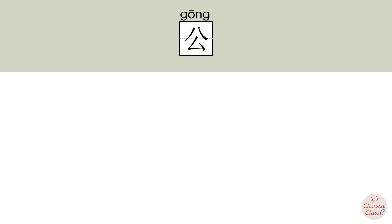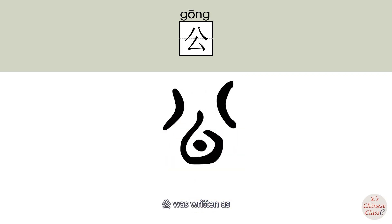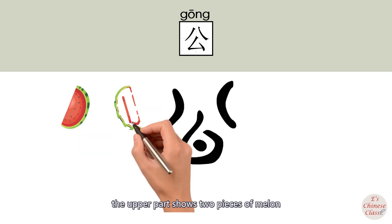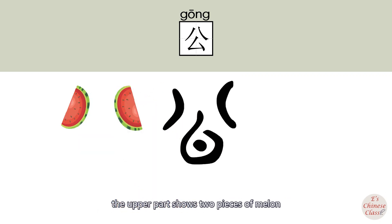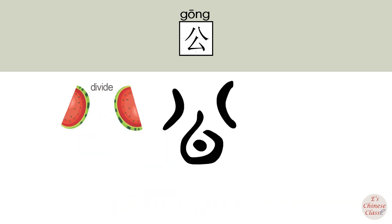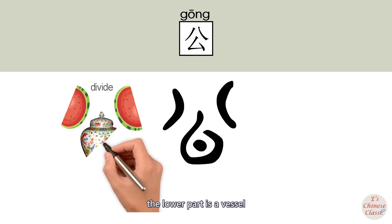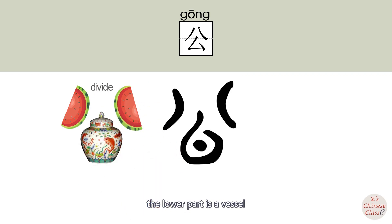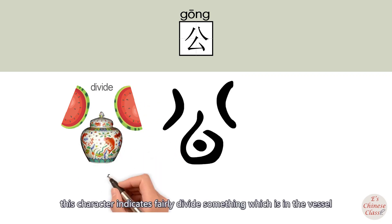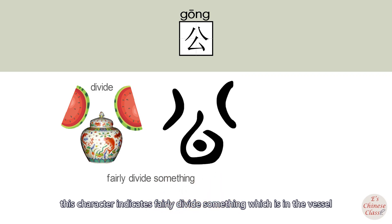deal with. In ancient Chinese, 公 was written in a form where the upper part shows two pieces of melon, meaning to divide, and the lower part is a vessel. This character indicates something fairly divided which is in the vessel.